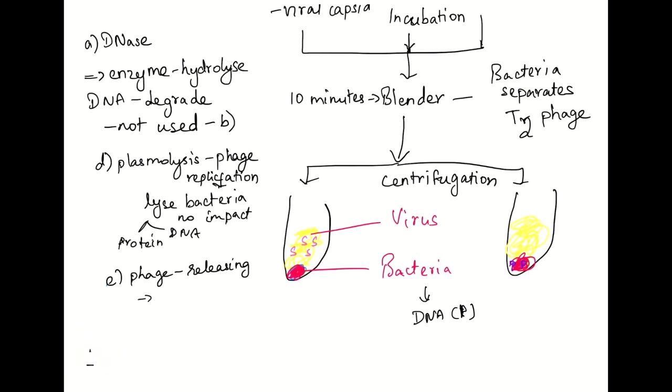This does not happen by blending because the blender will only separate the T2 phage and bacteria but does not release the enzyme. It needs some specific receptors to happen in vitro.